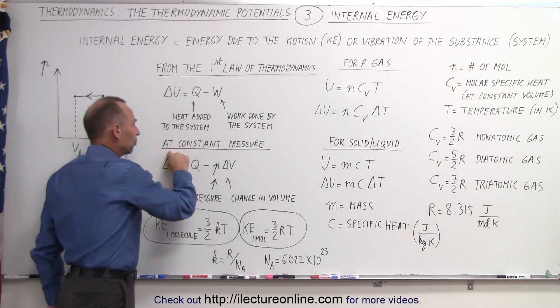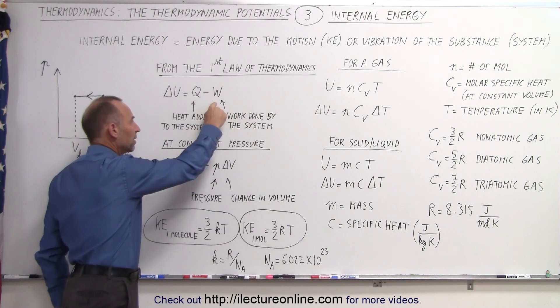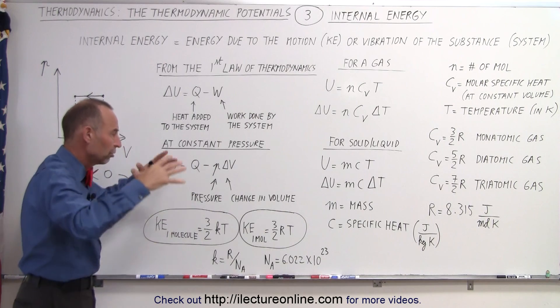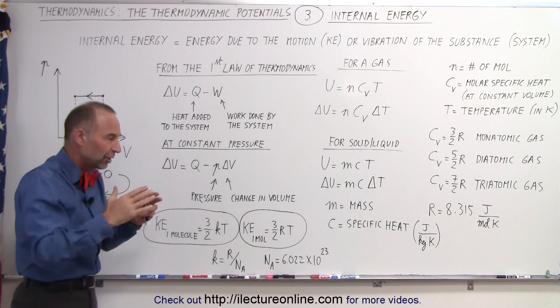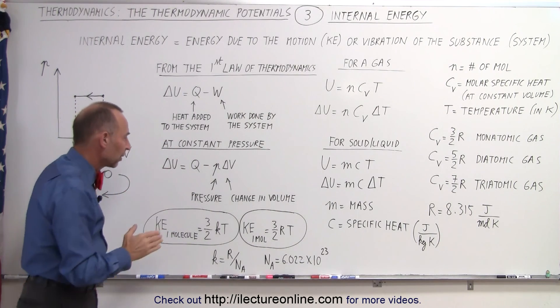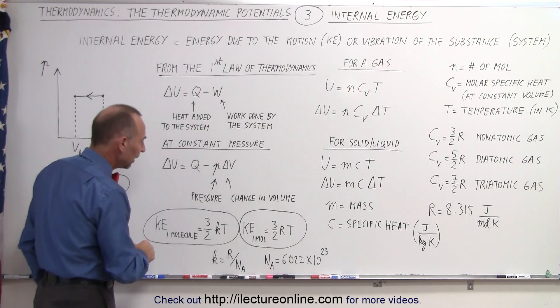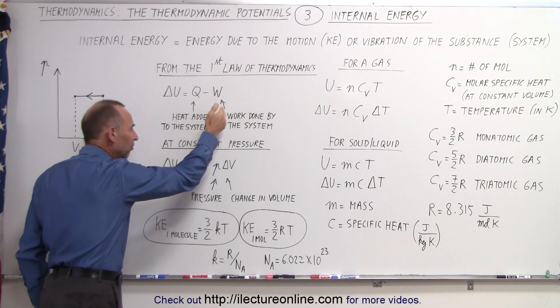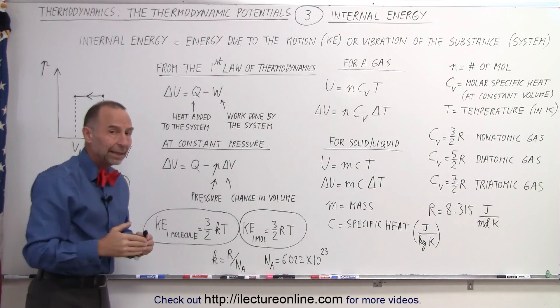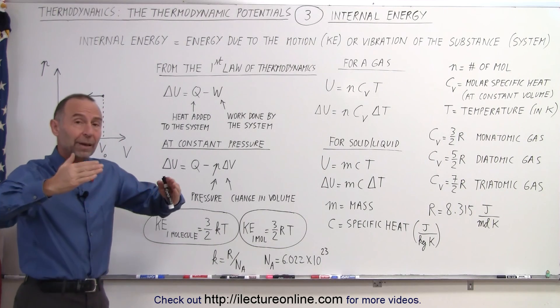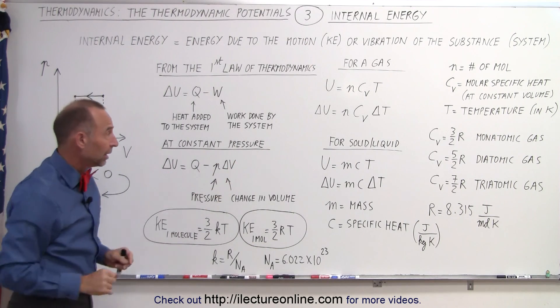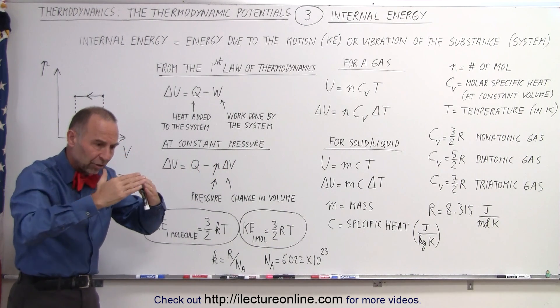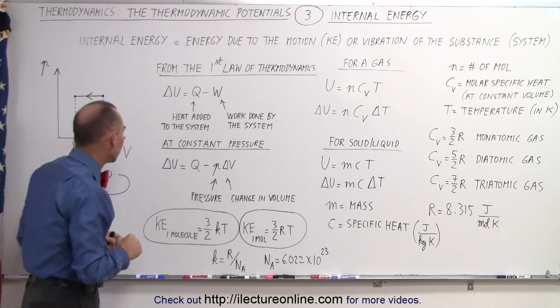So, the work, under a condition where we have constant pressure, can be defined as P times delta V, the pressure times a change in the volume, the pressure typically caused by the atmosphere, and then the change in the volume of the system or the substance. And so, when you multiply these two together, that constitutes the work done either by the system or on the system. It's considered work done by the system when the system expands and pushes against the atmosphere. It's considered work done on the system when the atmosphere pushes down on the substance and the system shrinks in volume.